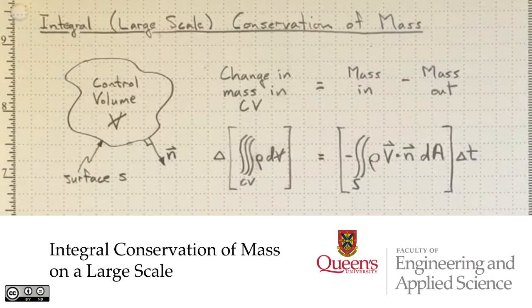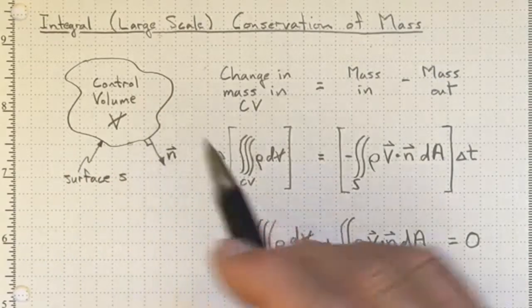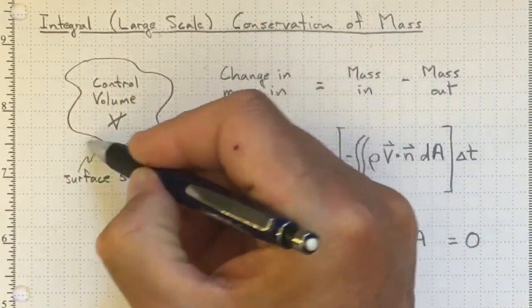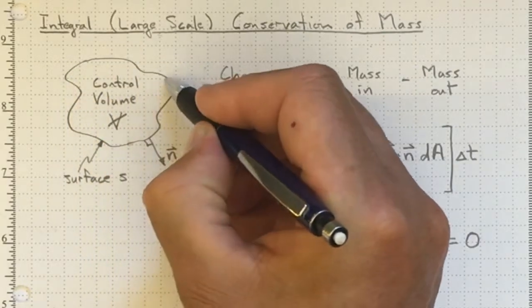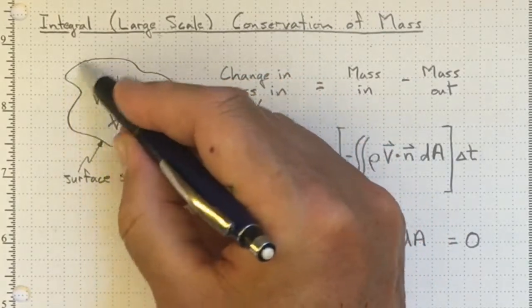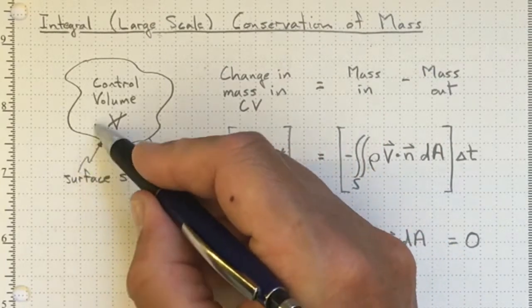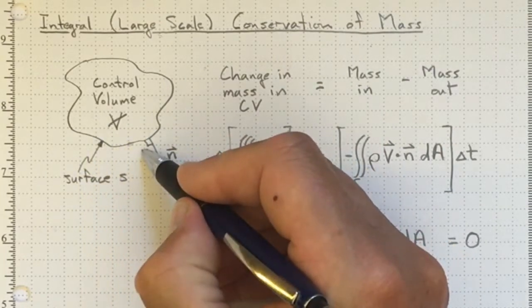If we're interested in conserving mass in our system to keep track of where the fluid is flowing, we first need to define a control volume, and we can define that by drawing its surface. Once we've drawn that surface, then we can keep track of everything that goes either in or out through that surface.